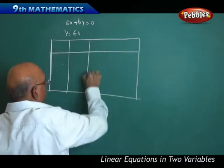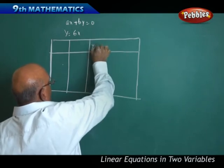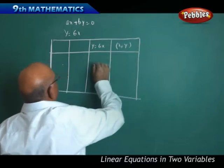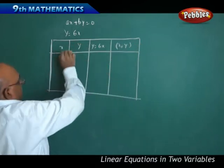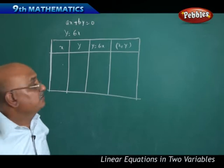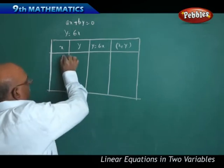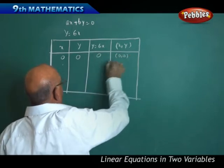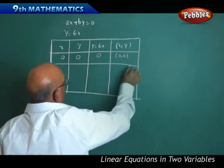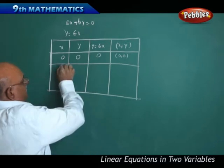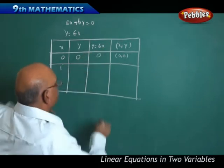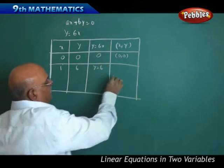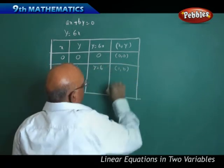Let us take y equal to 6x here. The pair is x comma y. If x is equal to 0, y is 0, naturally this will be 0. Therefore, 0 comma 0 is going to be the solution for this. Now if x is equal to 1, naturally y is equal to 6. Therefore, 1 comma 6 is going to be one solution for this.